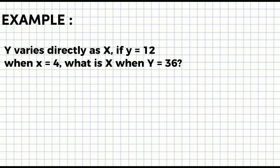Here's another example. Y varies directly as x. If y = 12 when x = 4, what is x when y = 36?